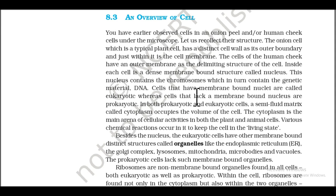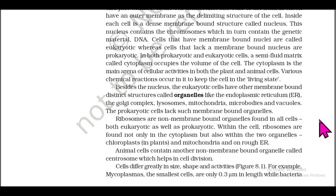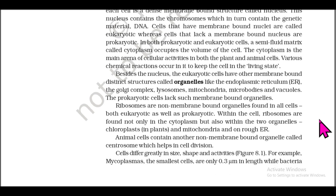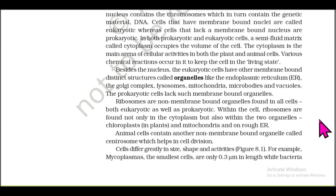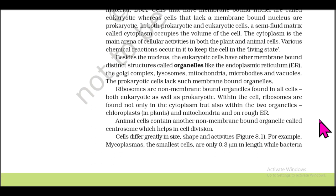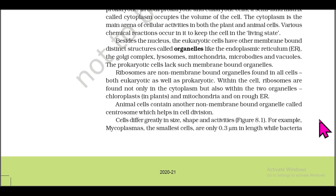In both prokaryotic and eukaryotic cells, a semi-fluid matrix called cytoplasm occupies the volume of the cell. The cytoplasm is the main area of cellular activities, where various chemical reactions occur to keep the cell alive. Eukaryotic cells have other membrane-bound organelles like the endoplasmic reticulum (ER), Golgi complex, lysosomes, mitochondria, microbodies, and vacuoles. Prokaryotic cells lack such membrane-bound organelles.